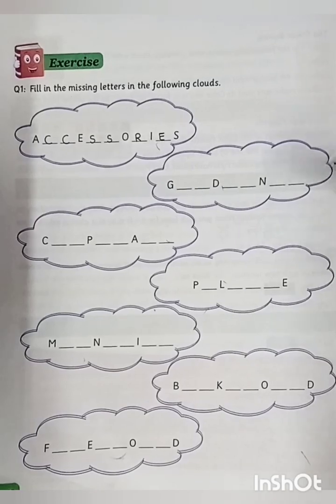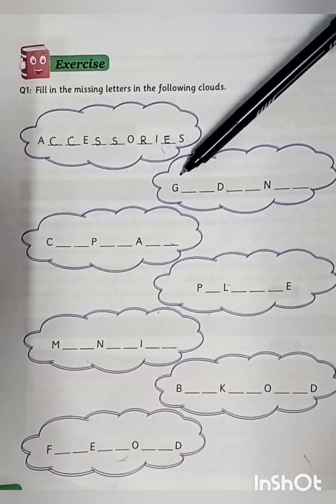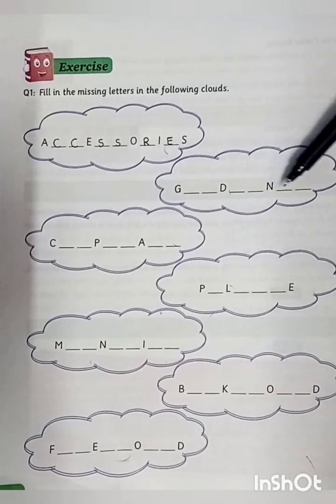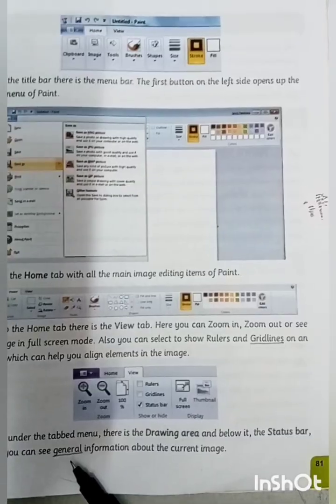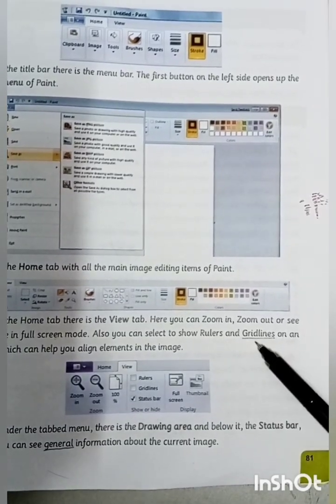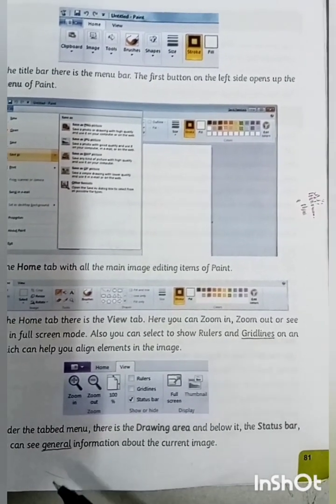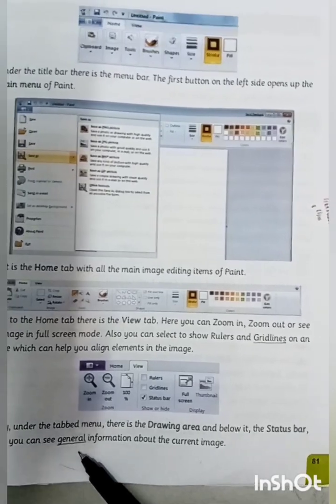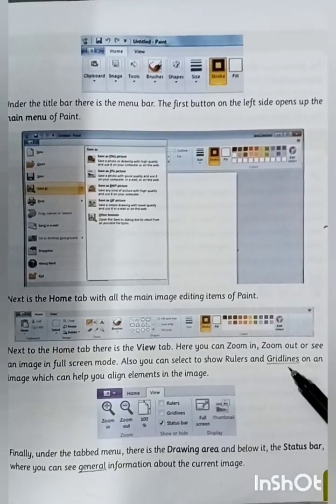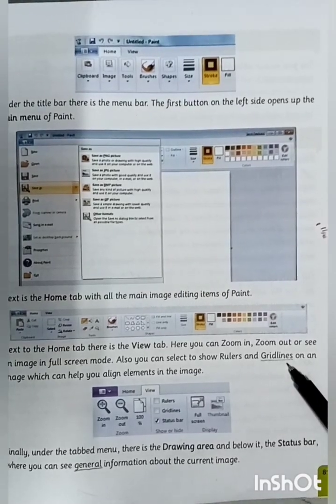Our second word is starting from G and it has 1, 2, 3, 4, 5, 6, 7, 8, 9 letters. Students, here we have 2 words starting from the letter G. First one is 'grid lines' and the second one is 'general.' As you can see that general is 7 letters word whereas grid line is 9 letters word, so grid lines is our required word.